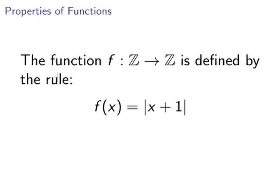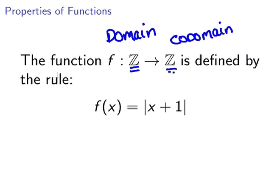So let's look at our function here. We have the function f defined by the rule f of x equals the absolute value of x plus 1. Importantly, we're going to look at the domain here. The domain is integers and the codomain is also integers.